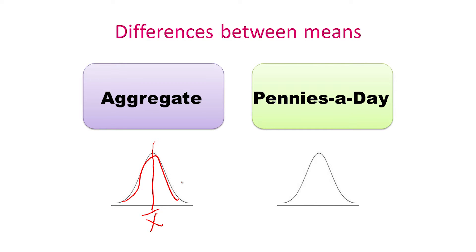So for example, on a ten point scale, maybe in the aggregate condition, the average response is 5, whereas in the pennies a day condition, let's say the average response is 6. Now at a naive level, you would say that 6 is greater than 5, and therefore, people in the pennies a day condition are more likely to purchase than people in the aggregate condition.